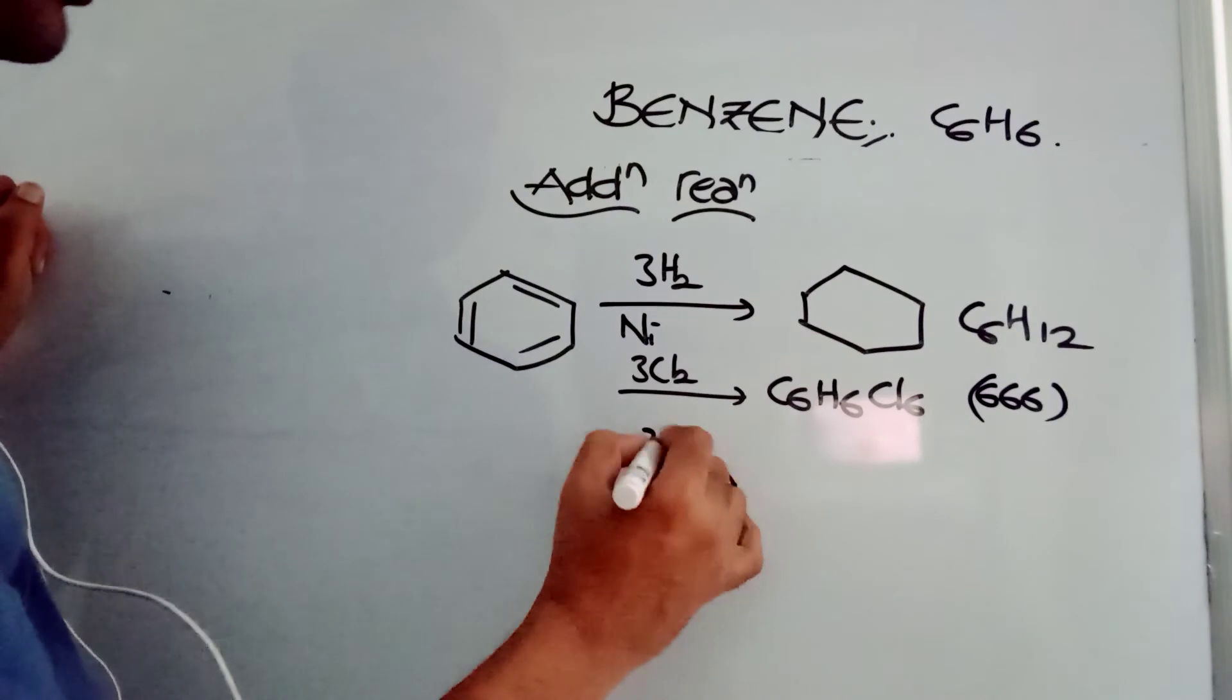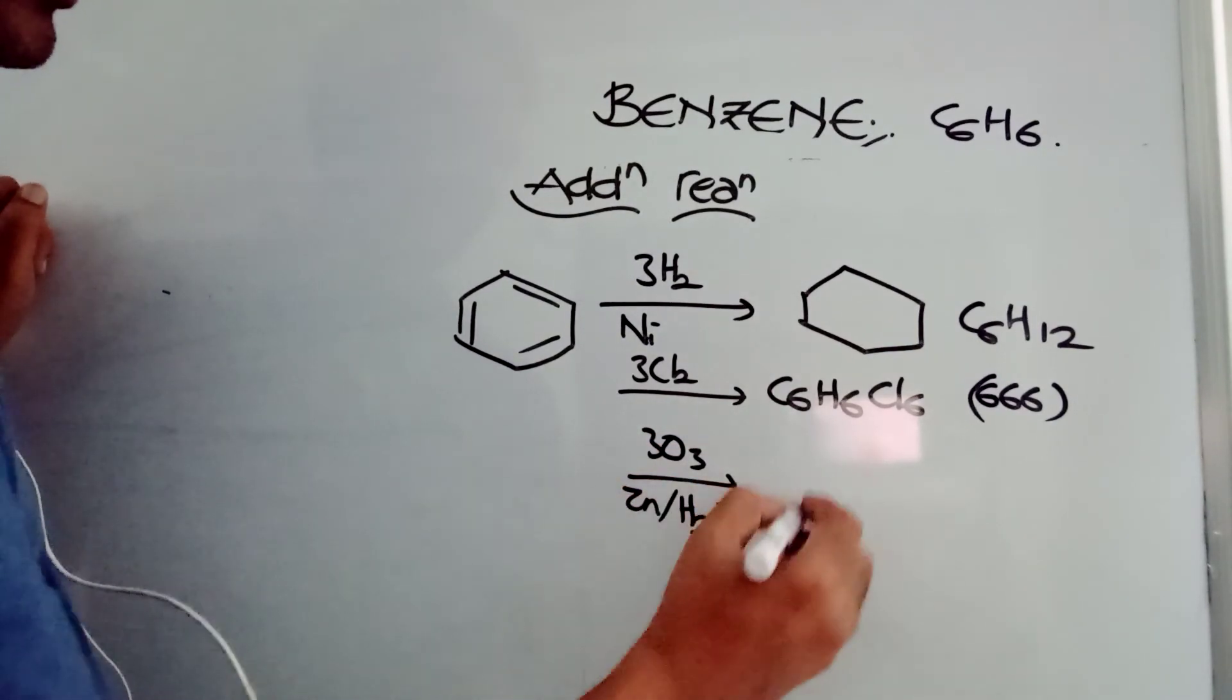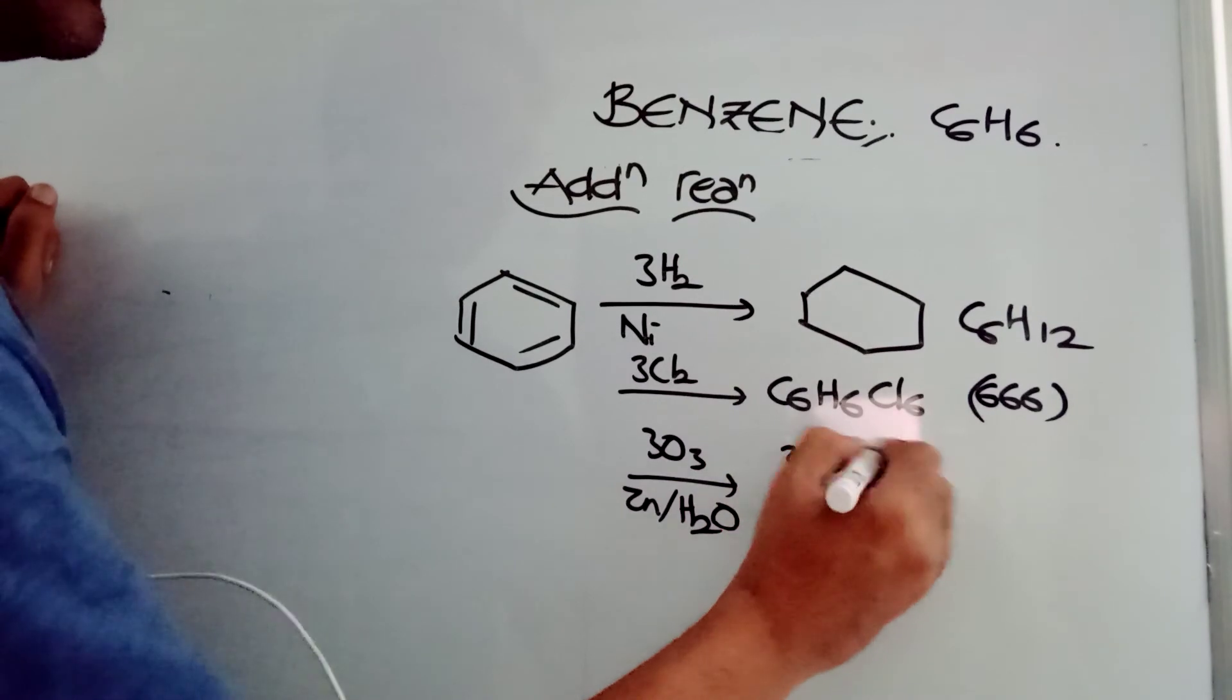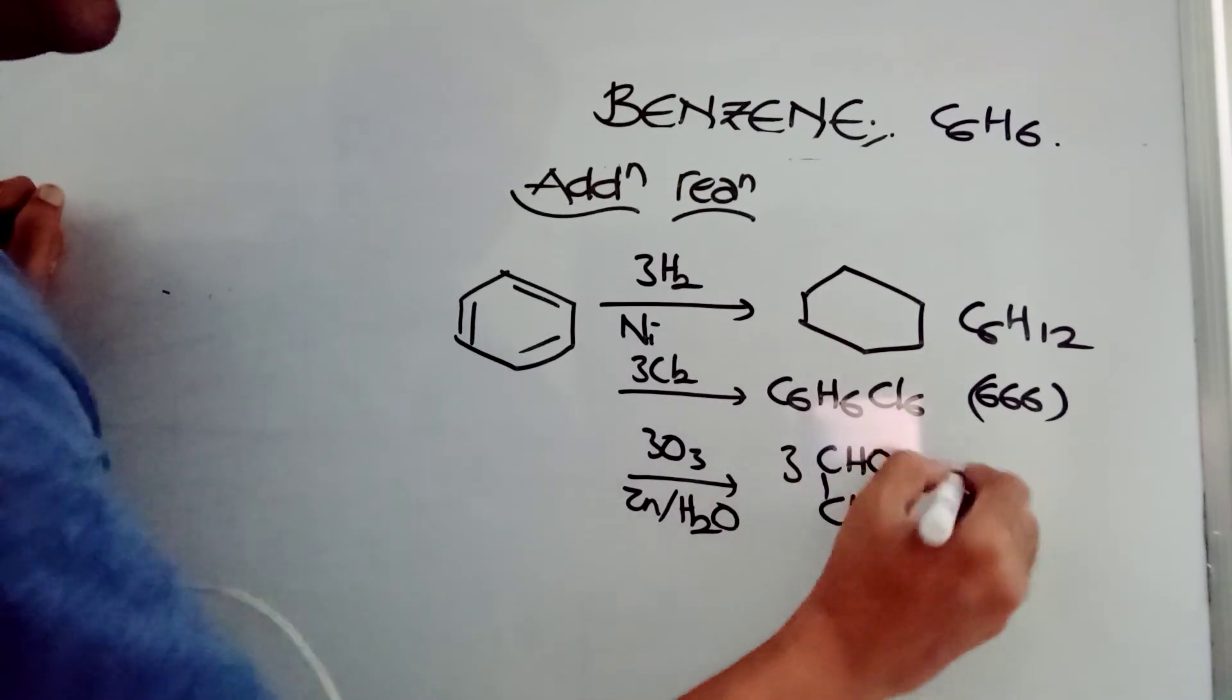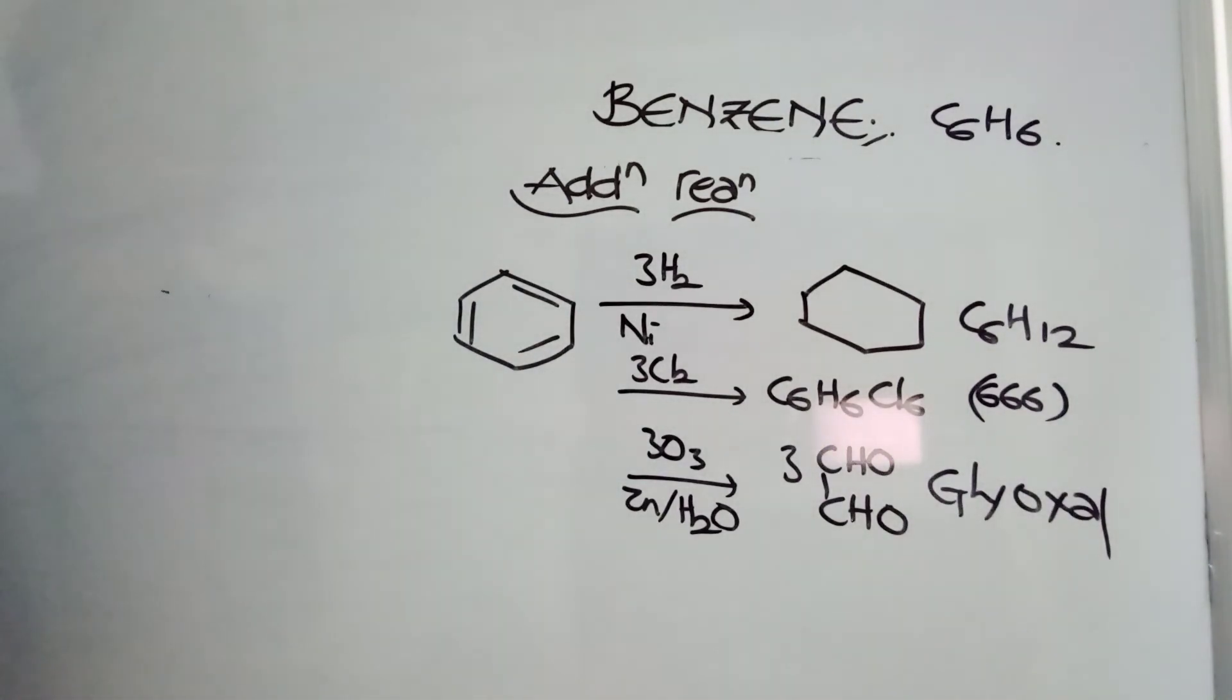It reacts with three moles of ozone. That means ozonolysis, zinc and water. Reductive ozonolysis gives you CHOCHO. Three moles of glyoxal is formed.